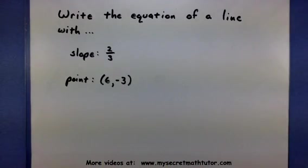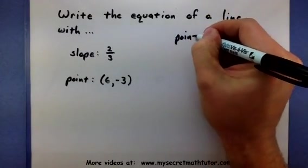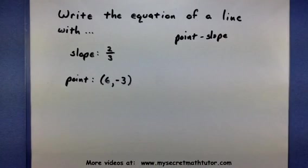In order to do this I'm going to borrow a formula known as point-slope. Now what this formula will allow us to do is basically plug in our slope and plug in our point and create the equation of a line.